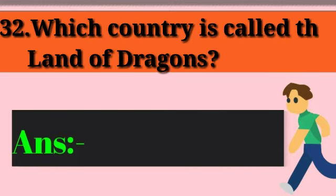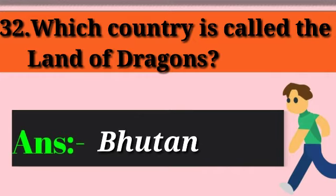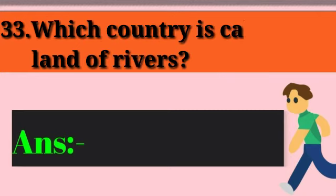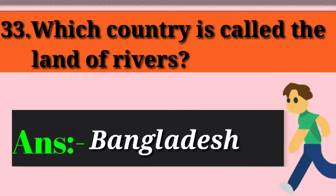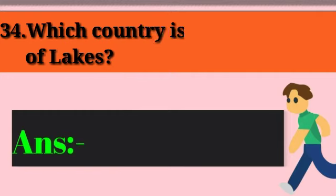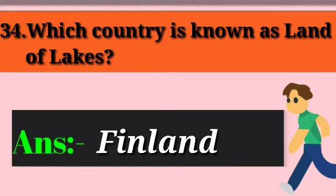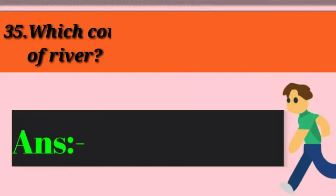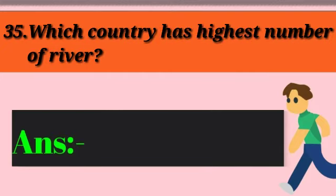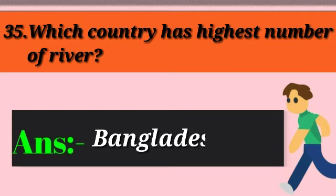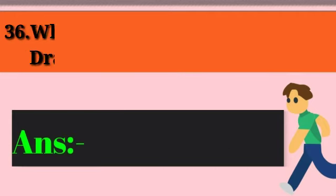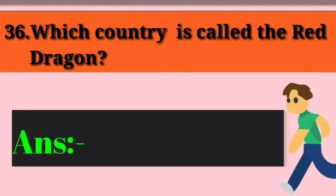Question 32: Which country is called the land of dragons? Answer: Bhutan. Question 33: Which country is called the land of rivers? Answer: Bangladesh. Question 34: Which country is known as the land of lakes? Answer: Finland. Question 35: Which country has the highest number of rivers? Answer: Bangladesh. Question 36: Which country is called the Red Dragon? Answer: China.